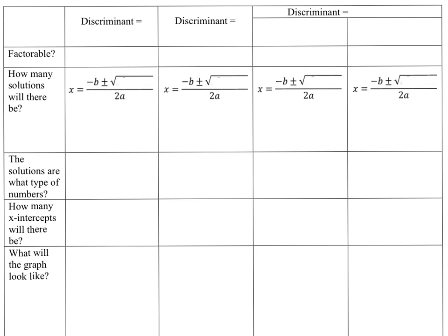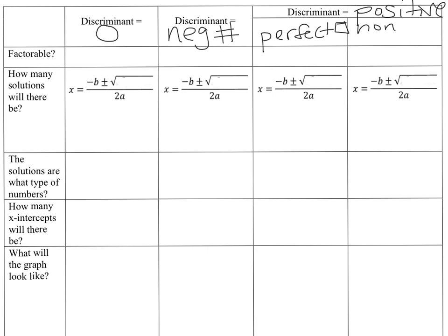There are four possibilities. One: the discriminant could be zero. Two: it could be a negative number. Three: it could be a positive number that is a perfect square. Four: it could be a positive number that is a non-perfect square. Those are all the different possibilities covering all the different types of numbers we could get.